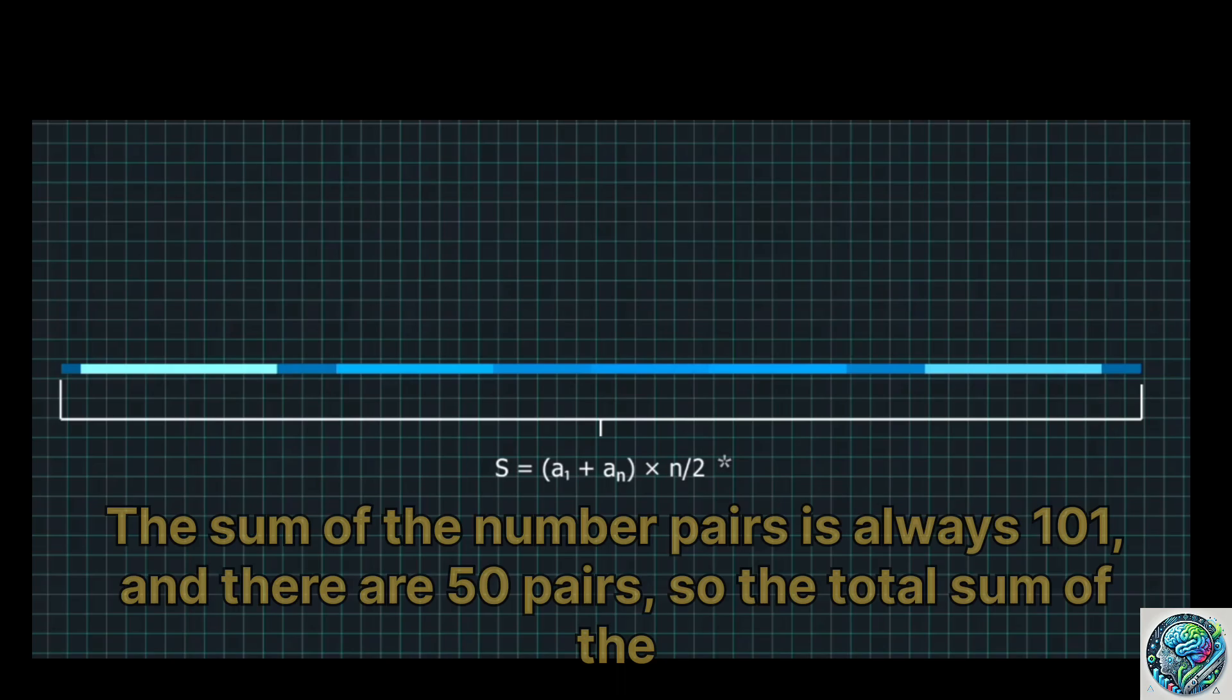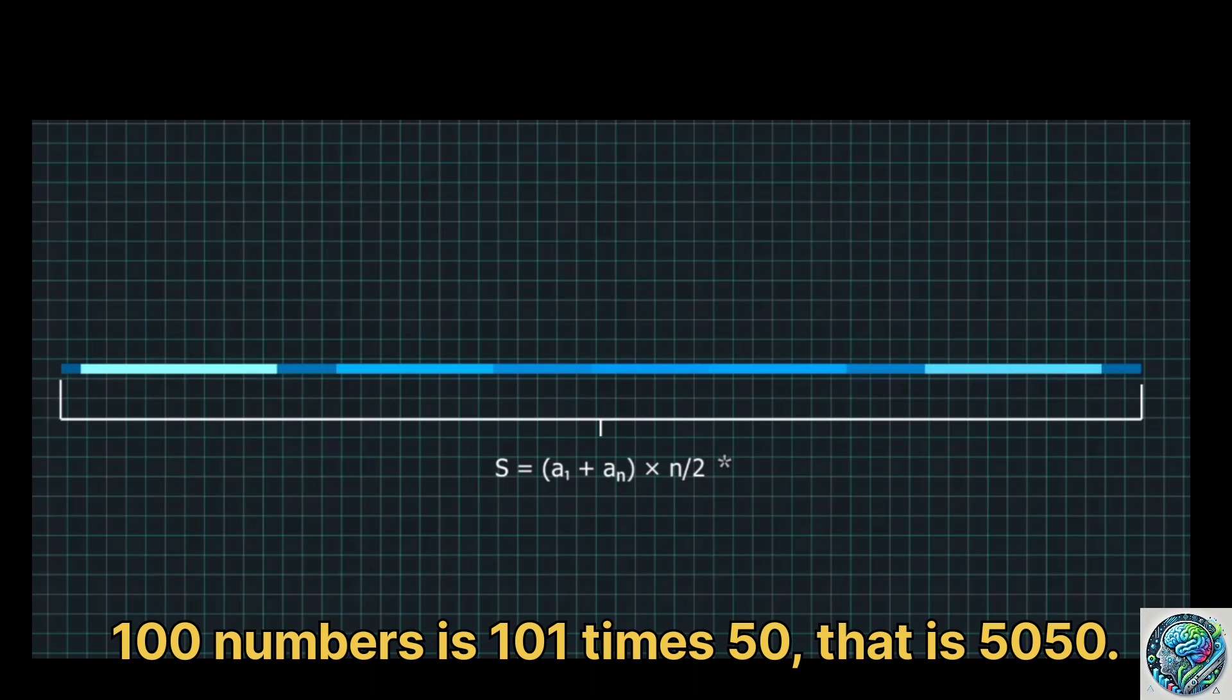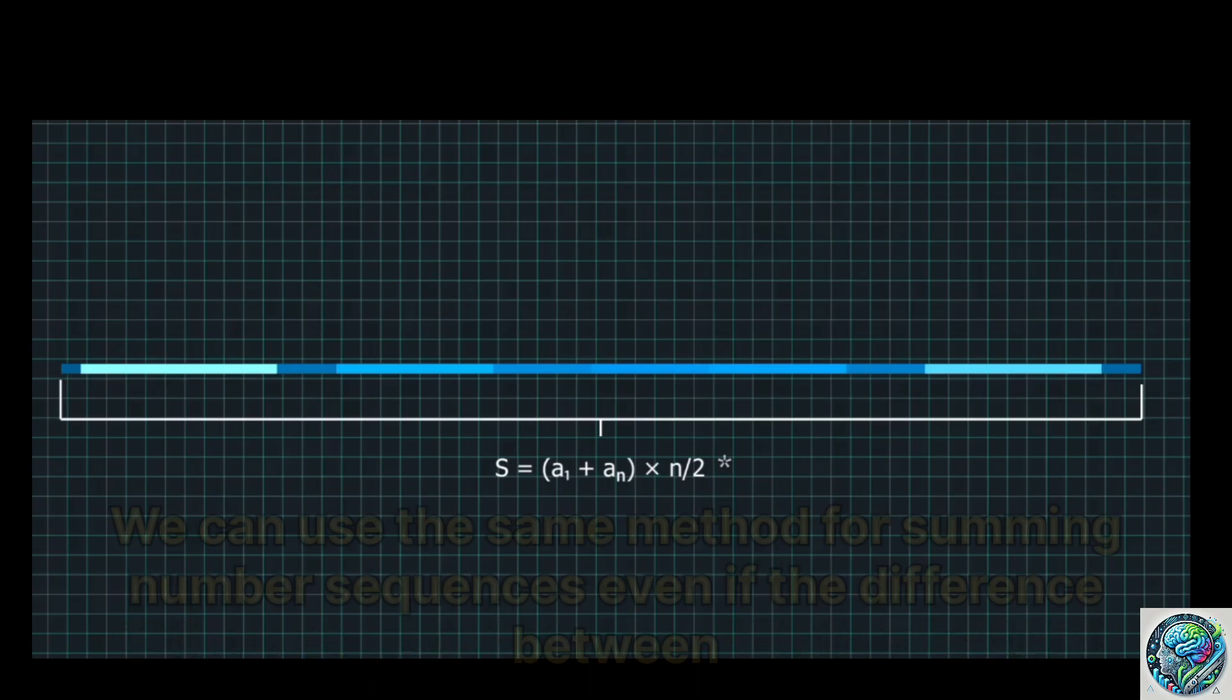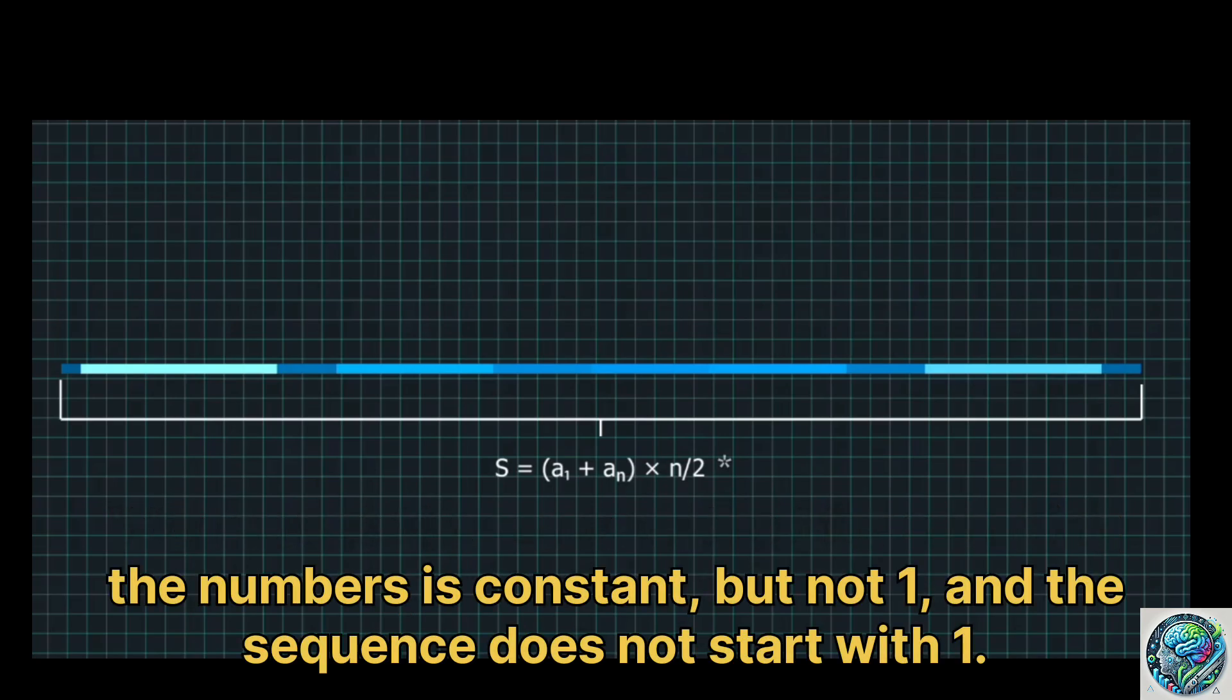The sum of the number pairs is always 101, and there are 50 pairs, so the total sum of the 100 numbers is 101 times 50, that is, 5050. We can use the same method for summing number sequences even if the difference between the numbers is constant but not 1, and the sequence does not start with 1.